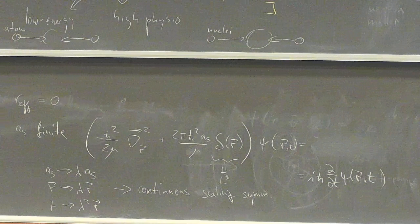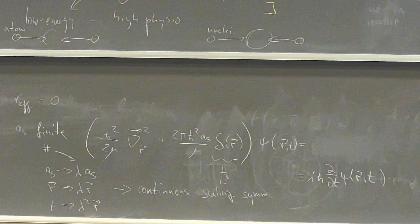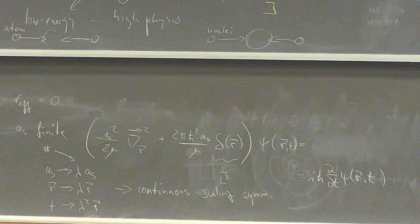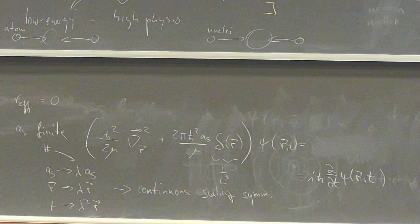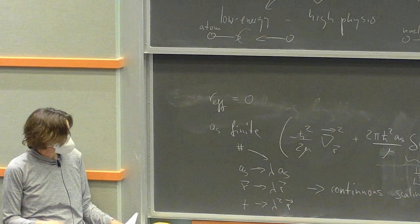This is different from the soccer field example where only discrete values were allowed — here any value is allowed. This also explains how we can apply one and the same theory to say two atoms or two neutrons: we have the scaling parameter that allows the system to go from small to big, so the same theory can describe things at different length scales.